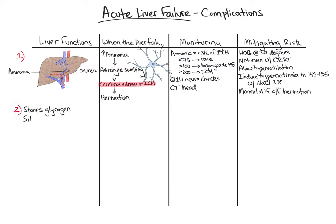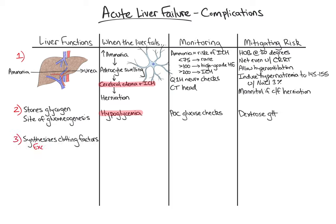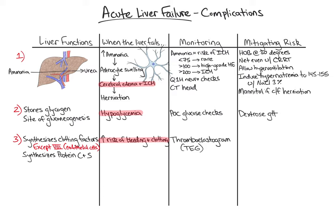Second, the liver stores glycogen and is a major site of gluconeogenesis. When the liver fails, hypoglycemia may develop. We monitor for hypoglycemia with frequent blood glucose checks and treat it with a dextrose infusion. Third, the liver synthesizes clotting factors — with the exception of factor VIII, which is produced by endothelial cells — and synthesizes anticoagulants, protein C and S. When the liver fails, patients are at increased risk for both bleeding and clotting. As the INR may not be an accurate reflection of overall coagulopathy, the functional coagulation status of patients with acute liver failure is best monitored with a thromboelastogram. All patients with acute liver failure should receive stress ulcer prophylaxis with either an H2 receptor antagonist or proton pump inhibitor, as well as thromboembolic prophylaxis with either low molecular weight heparin or unfractionated heparin.